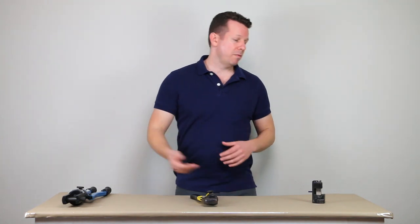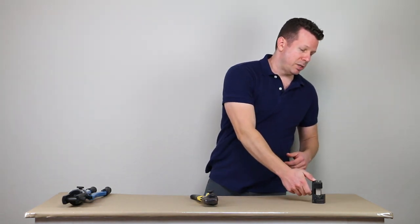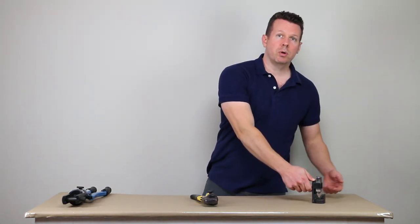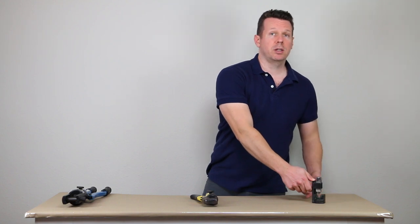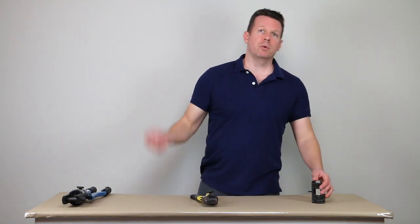So starting off, we have the hammer crimper. Basically you're going to insert the lug terminal, insert the cable into the lug terminal, drop the anvil and hit it with a hammer and you have your crimp.